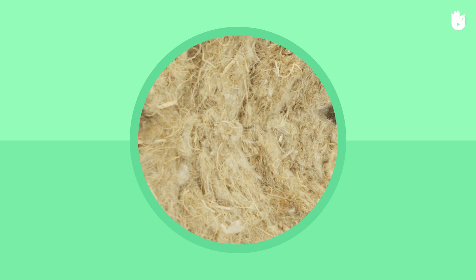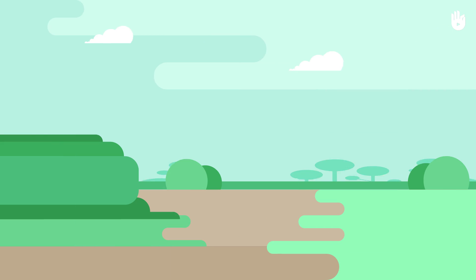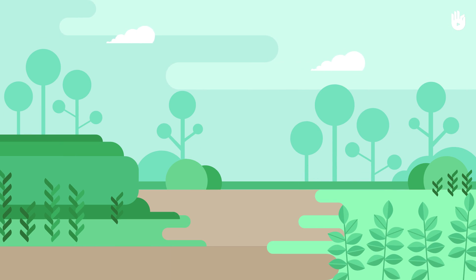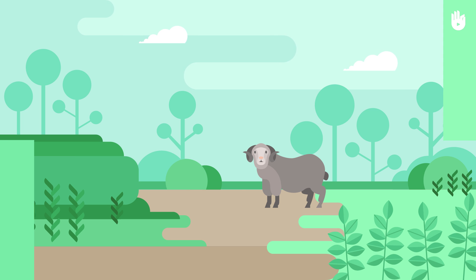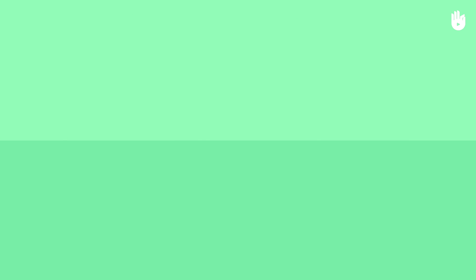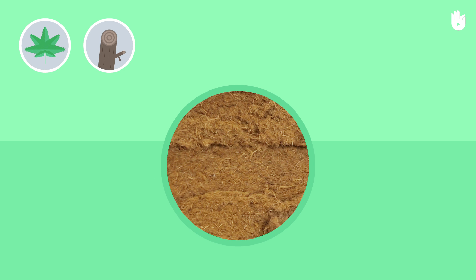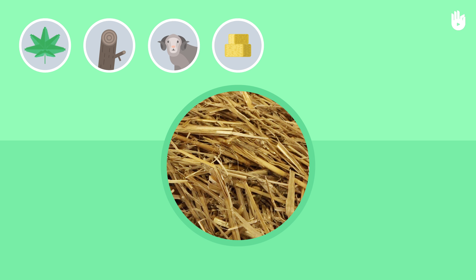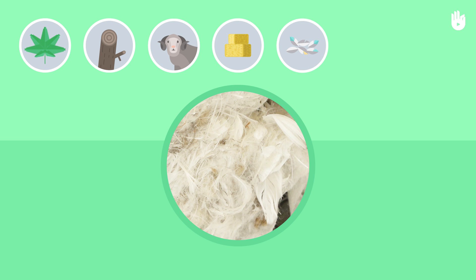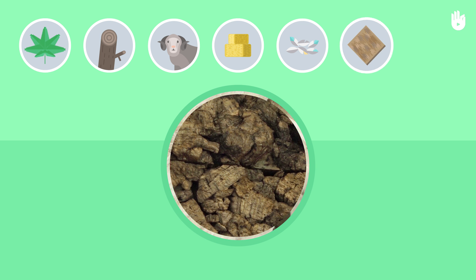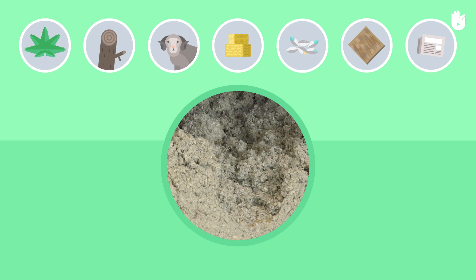Thirdly, biosourced insulation. Biosourced insulation comes from plant or animal based materials. Here are some examples of biosourced insulation: hemp, cotton wool, wood wool or sheep's wool, straw, feathers, cork, and pulp wadding from recycled newspaper.